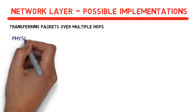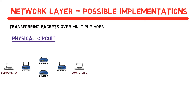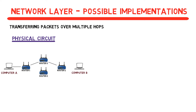One way would be a physical circuit. Let's say we have two computers and a few routers, and computer A wants to send a packet to computer B. In a physical circuit network we have to physically establish a connection between A and B. So for example, we would connect computer A and router 1 via a cable, then router 1 and router 3, then router 3 and router 4, and lastly set up a cable between router 4 and computer B.